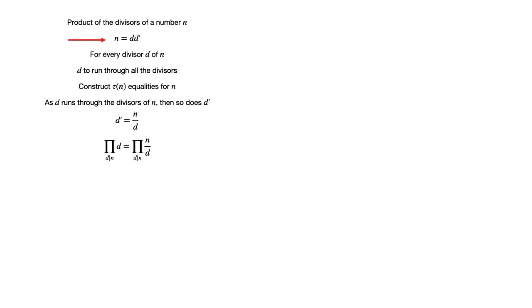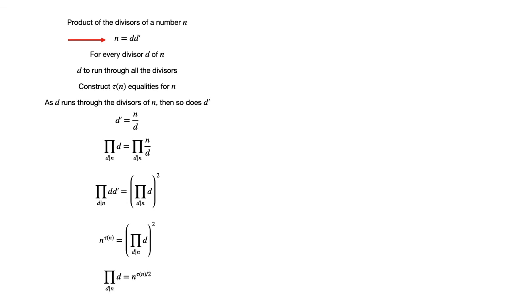The last thing we consider before concluding part 1 is the product of the divisors of a number. We have n = d·d' for every divisor d of n. As d runs through all the divisors, we construct tau(n) equalities for n. It is also seen that as d runs through the divisors of n, so does d'. Since d' = n/d, the product of d over all divisors of n equals the product of n/d over all divisors of n. Therefore the product of d·d' over all divisors equals the product of d over all divisors squared. Hence n^tau(n) equals the product of d over all divisors, squared. This leads to the interesting formula: the product of all divisors of n equals n^(tau(n)/2).